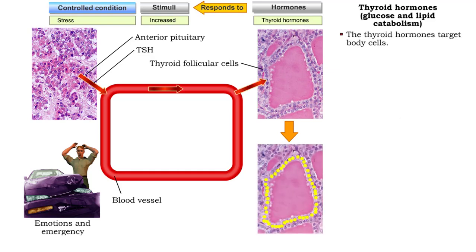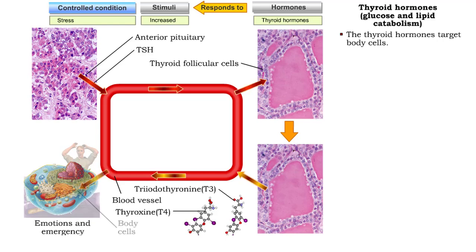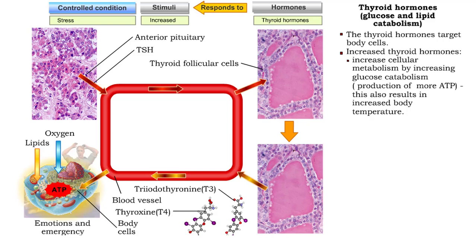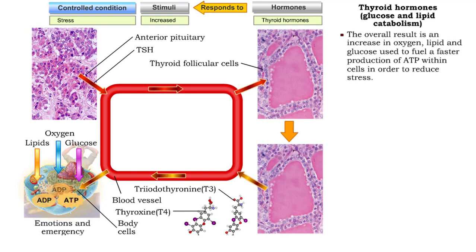The thyroid hormones target body cells in order to promote an increase in cellular metabolism, due to the production of more ATP from increased glucose catabolism, and an increase in lipolysis, providing cells with energy for cellular metabolism from lipids. The overall result is an increase in oxygen, lipid, and glucose used to fuel a faster production of ATP within cells in order to reduce stress.